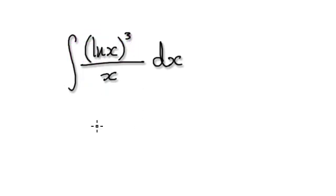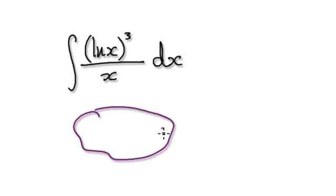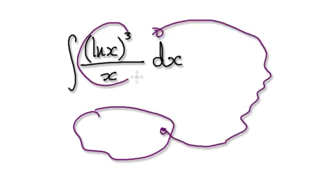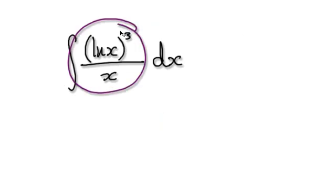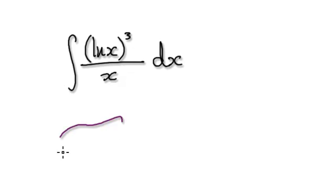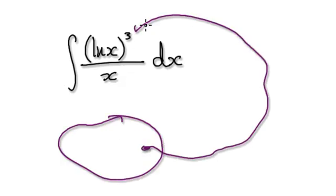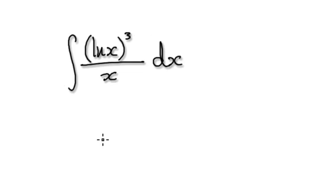So when you're integrating something like this, try and realize that 1 over x is the exact derivative of natural log of x. So when you integrate this, you're really looking for something such that when you differentiate it, it will give you this thing here. Make this to be your initial guess.